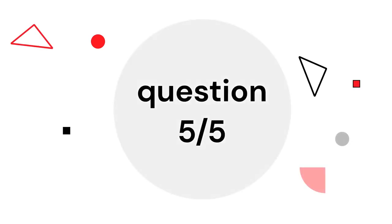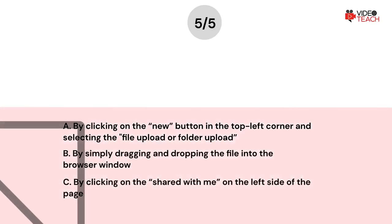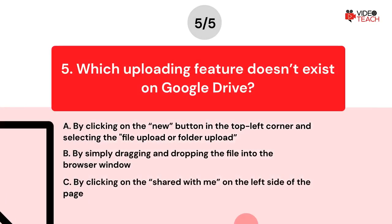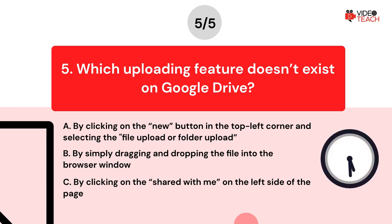Question number five. Which uploading feature doesn't exist on Google Drive? Option A: by clicking on the new button in the top left corner and selecting the file upload or folder upload. Option B: by simply dragging and dropping the file into the browser window. Option C: by clicking on the shared with me on the left side of the page. Now you have about 15 seconds to think about your answer.